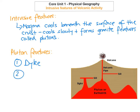The second intrusive or pluton feature you need to know for your Leaving Cert is sills. Sills are basically when you get a horizontal sheet of magma that forces its way in between the cracks and fissures of sedimentary rock and then cools really slowly to form granite. So a dike is when it's vertical, and when they go straight across within the cracks we call them sills — they're horizontal.